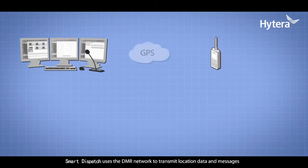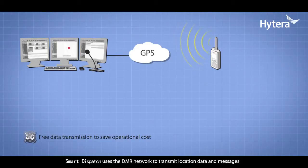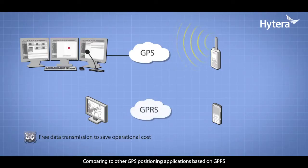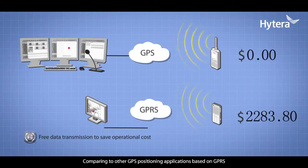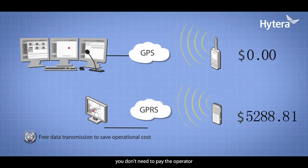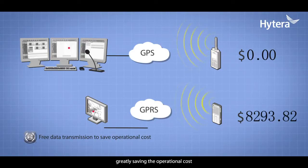Smart Dispatch uses the DMR network to transmit location data and messages. Comparing to other GPS positioning applications based on GPRS, you don't need to pay the operator, greatly saving the operational cost.